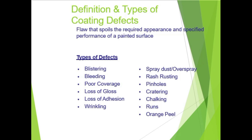The definition of a coating defect: a flaw that spoils the required appearance and specified performance of the painted surface. A flaw means any imperfection that damages the required appearance of the painted surface. Types of defects include: blistering, bleeding, poor coverage, loss of gloss, loss of adhesion, wrinkling, spray dust, rusting, pinhole, tattering, shocking, orange peel, and more.